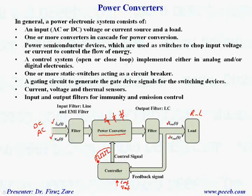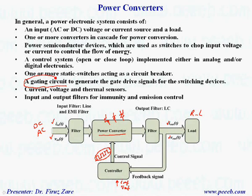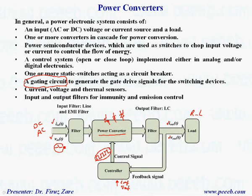Sometimes the signal from the controller is not suitable to turn on or turn off the power switches, so we need a gate drive system. Gate drive circuits are also important in some applications to turn on and off the power switches. For protection, sometimes we need a circuit breaker — a static switch to turn off the whole system in case of short circuit or fault. We also need different sensors to measure over-current, over-voltage, and over-temperature. For quality purposes we need filters — either line filter, input filter, or output filter.